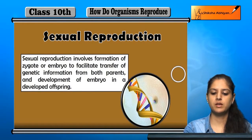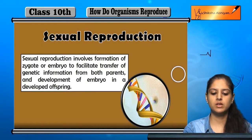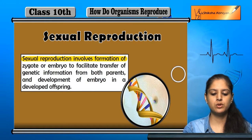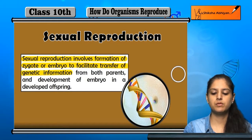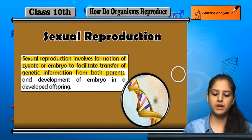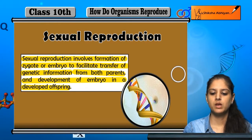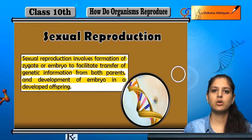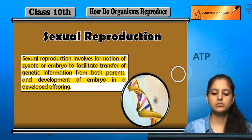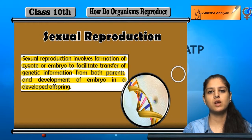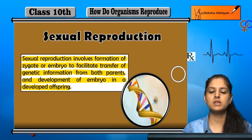A second type of reproduction is sexual reproduction. Sexual reproduction involves the formation of a zygote or embryo, to facilitate the transfer of genetic information from both parents and the development of the embryo into a developed offspring. The genetic information is transferred from parents to child.